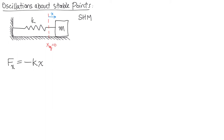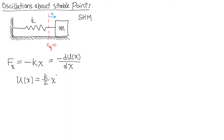The force depends only on position and the work done is path independent. Therefore, we should be able to express this force equivalently as the gradient of a potential — in this case, a potential in 1D. We know from previous work that this potential can be written as one half K X squared.